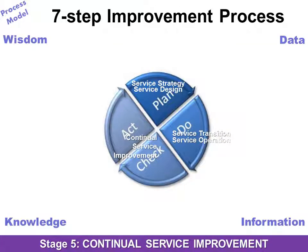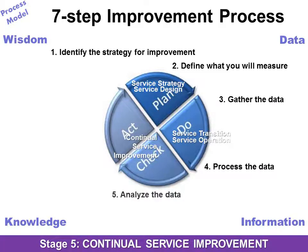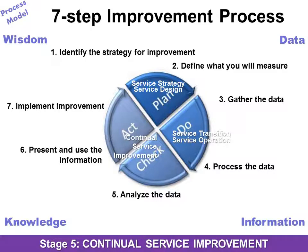Remember Deming? The seven-step improvement process lays right over Deming's plan, do, check, act — and the five life cycle stages lay right over that. The first step is to have the wisdom to know there's a problem and identify the strategy for improvement. Then it's all about data: define what you will measure and collect it. ITIL suggests that poor or incomplete data is better than no data at all. Process the data and it turns into information. Then you can analyze it — when you can identify the who, what, when, why, and how, it becomes knowledge. Then you can present and use the information, implement the improvement, and push that wheel uphill.